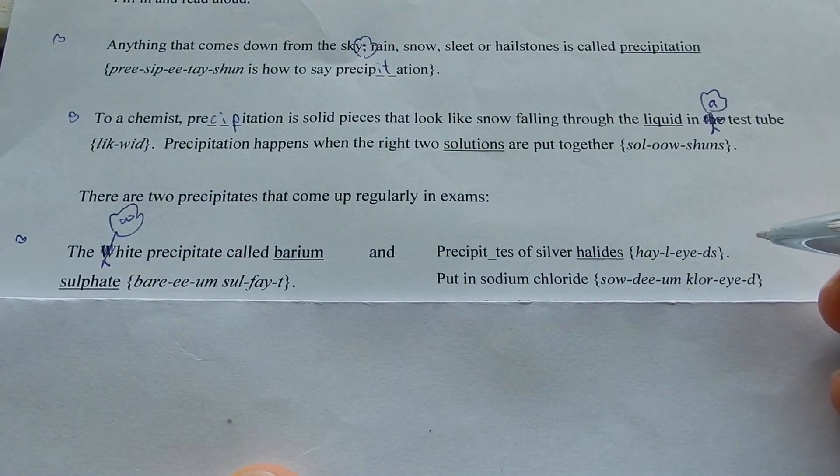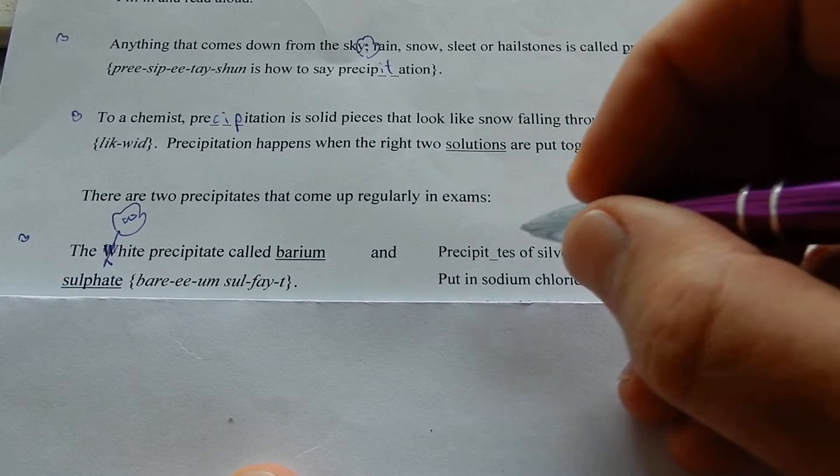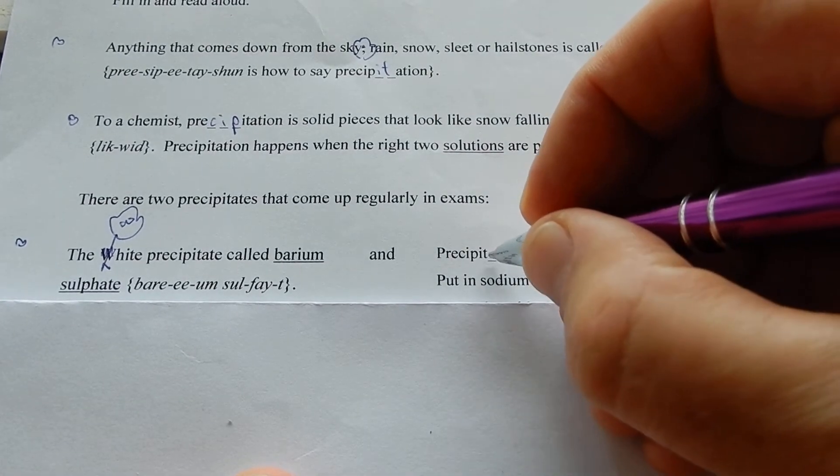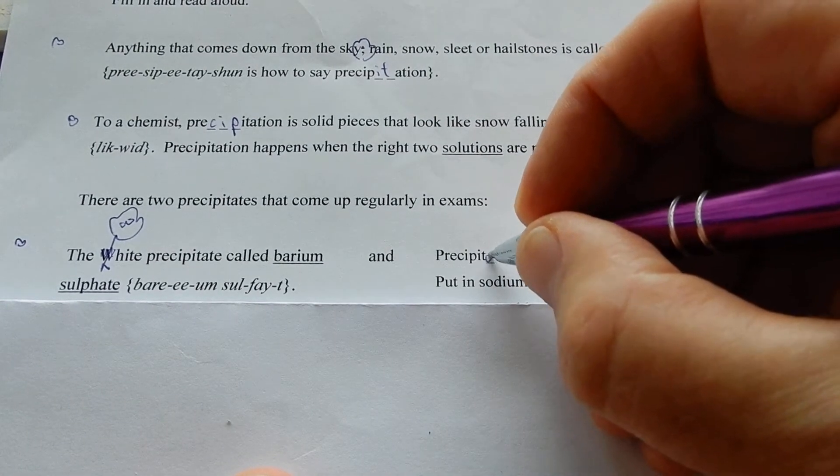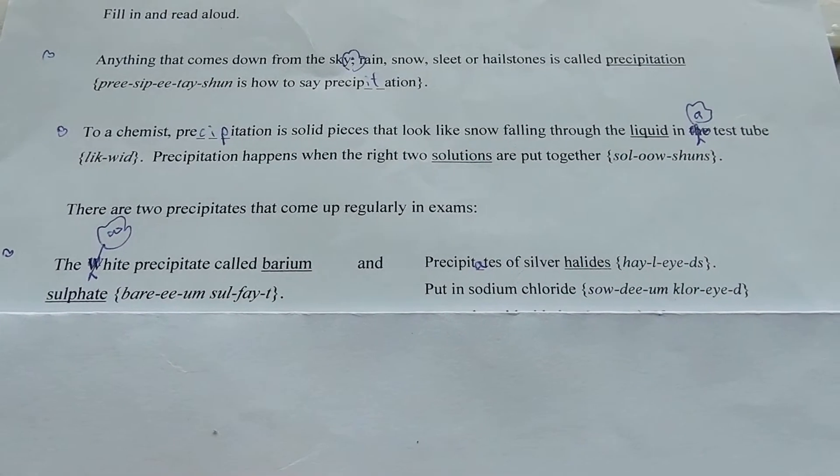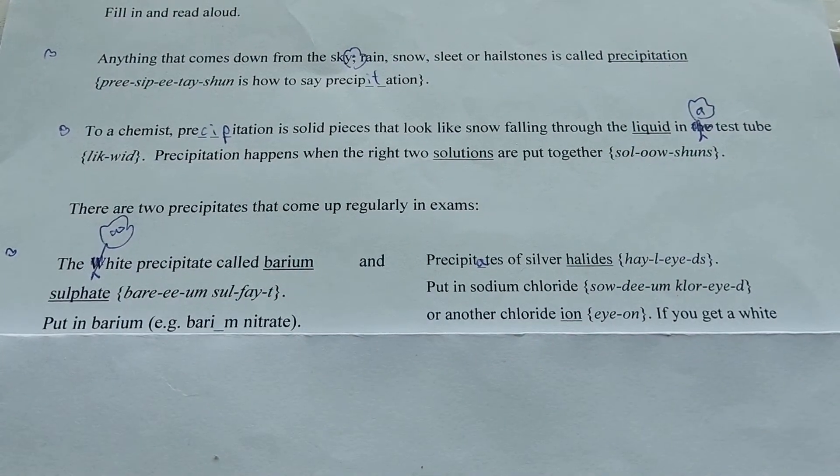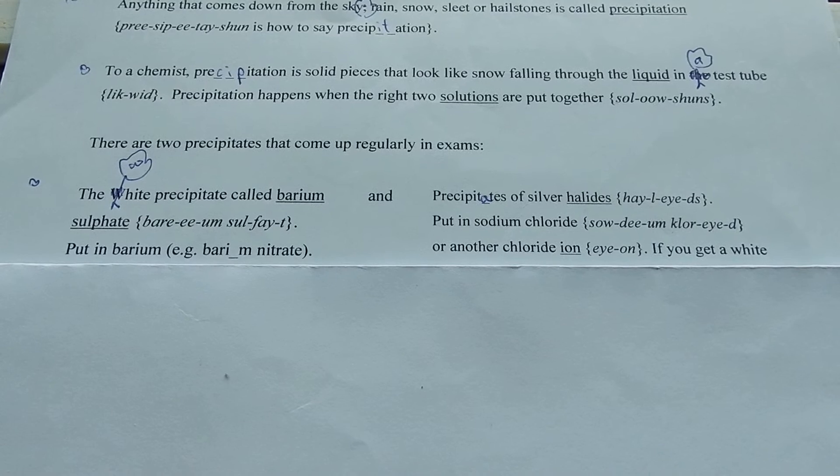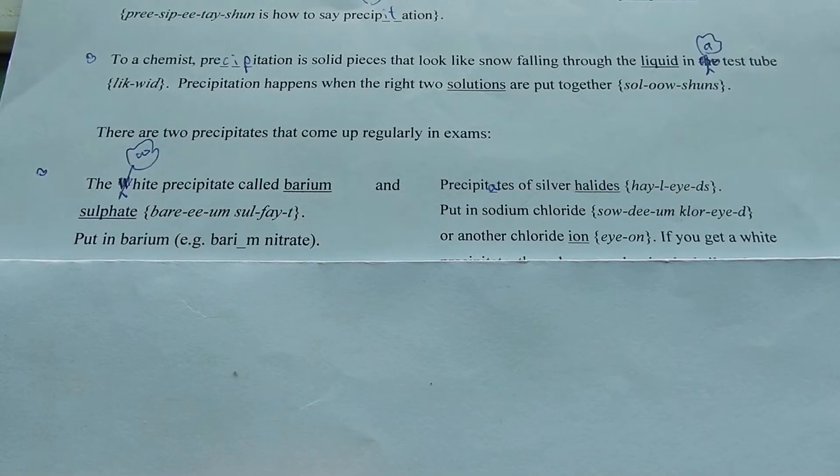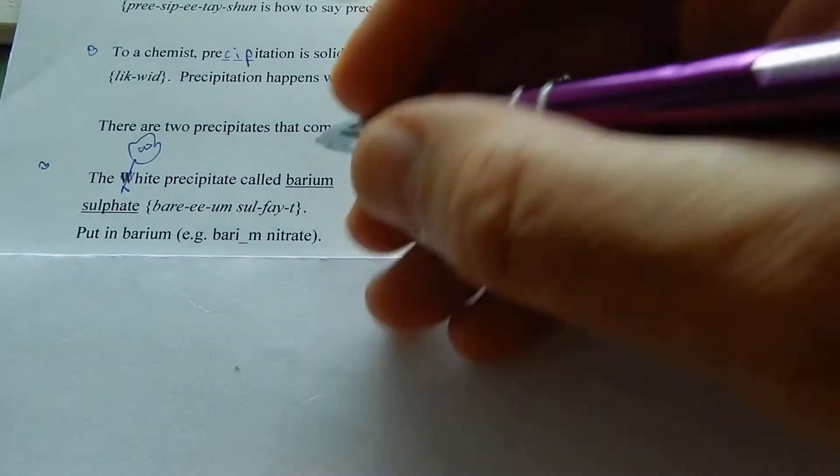Halides? Halides. Sulfate. Oh! Sulfate is spelled with an F in America. Put in barium, e.g., barium nitrate.